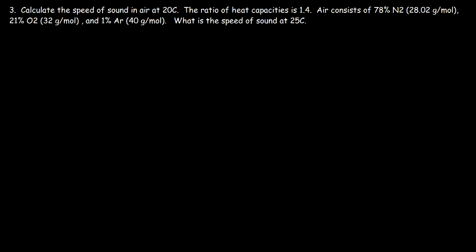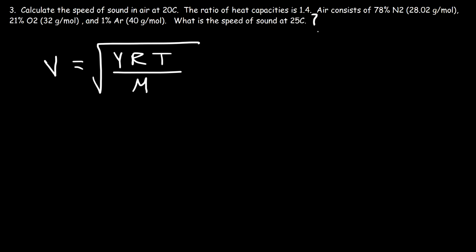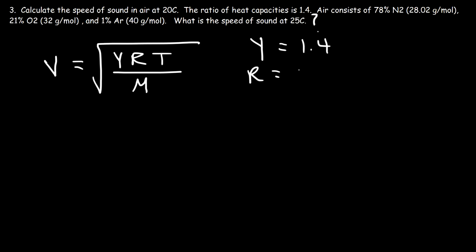Number three: calculate the speed of sound in air at 20 degrees Celsius. The ratio of heat capacities is 1.4. Air consists of 78% nitrogen, 21% oxygen, and 1% argon. The formula we need is: speed equals the square root of gamma times R — the gas constant — times the Kelvin temperature, divided by the average molar mass of air. Gamma is 1.4 and R is 8.3145 joules per mole per Kelvin.